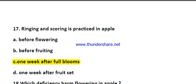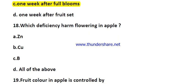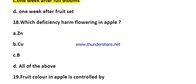Question number eighteen: which deficiency harms flowering in apple? Options are zinc, copper, and boron, or all of the above. The right answer is all of the above — zinc, copper, and boron all harm flowering in apple if any deficiency occurs.